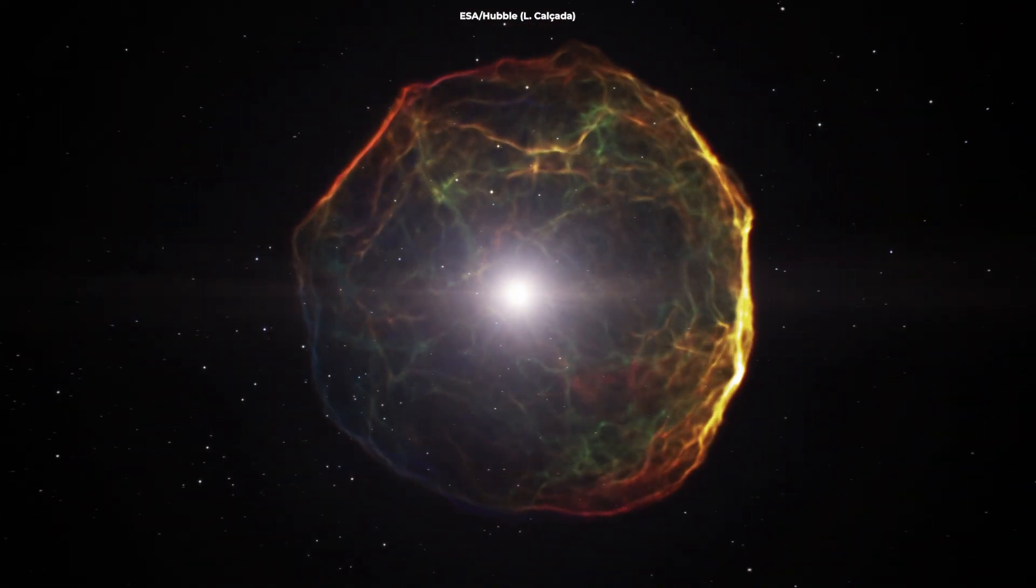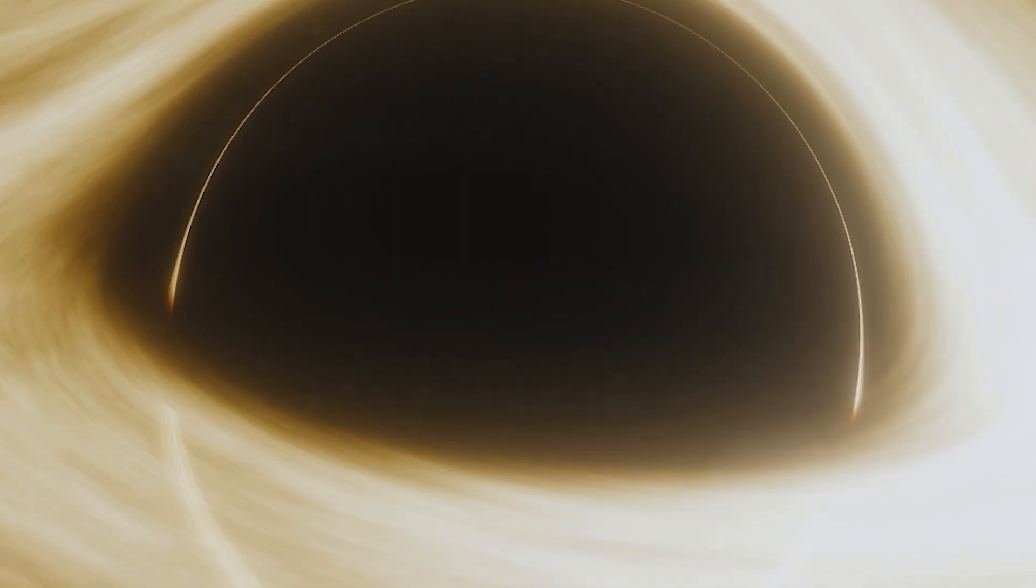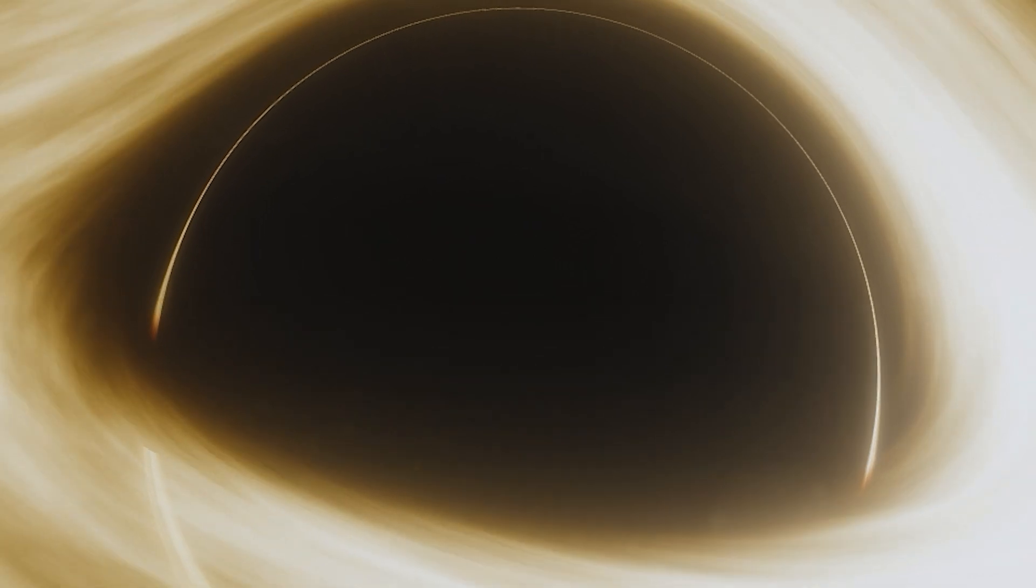So the core collapses, and if the star is massive enough, it can form a black hole. In other words, a black hole is a sort of stellar corpse.